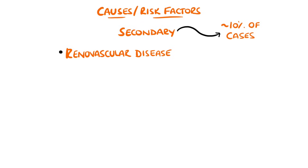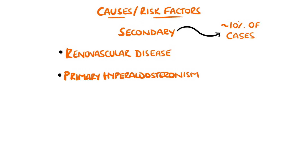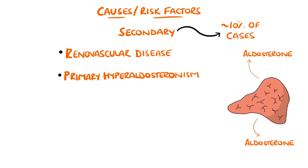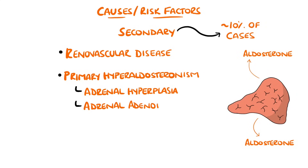Primary hyperaldosteronism is another cause, where there is excessive secretion of aldosterone from the adrenals, most commonly from hyperplasia of both adrenals, but possibly due to an adrenal adenoma secreting aldosterone, termed Conn's syndrome.